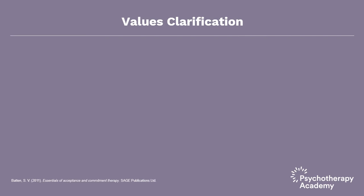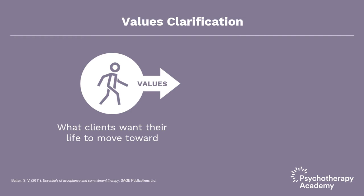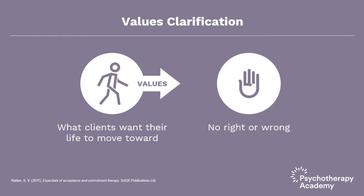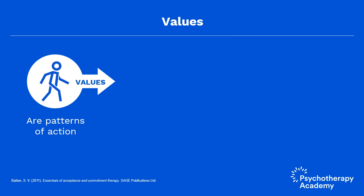The ACT core process described as values clarification is about working with the client to determine what he wants his life to move toward rather than away from. Values aren't about whether certain choices are right or wrong or good or bad. Values are simply verbally construed descriptions of what is important to someone and where he or she wants to go in life. Values are seen as patterns of action that provide a sense of meaning and that can help coordinate our behavior over long time frames.